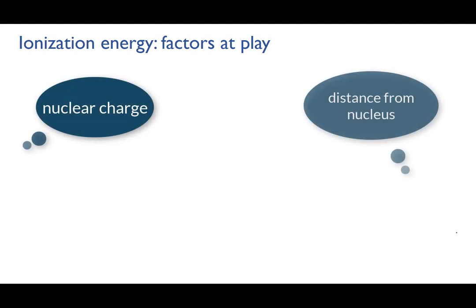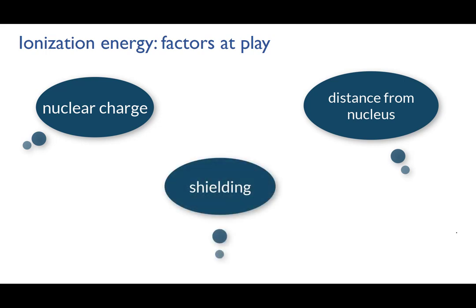The distance the electron is from the nucleus, what electron shell is it in, and the fact that electrons in lower energy levels can shield outer electrons from the full attraction of the nucleus. The main thing we're looking at here is how each of these affects the attraction between the nucleus and the electron that we're trying to remove.